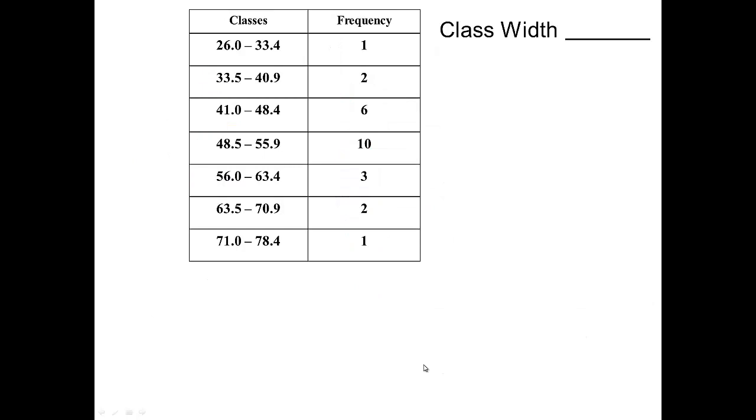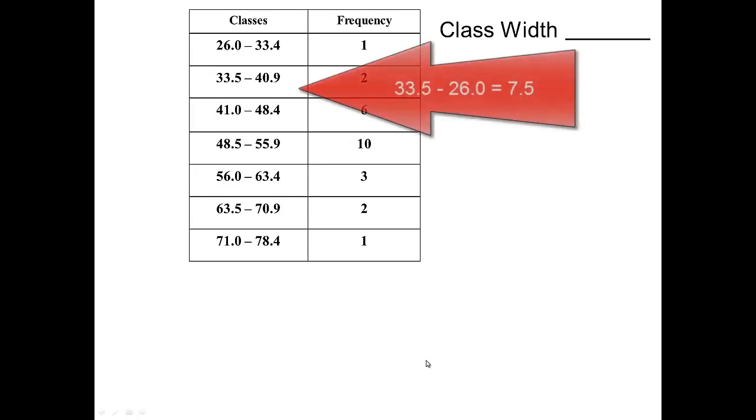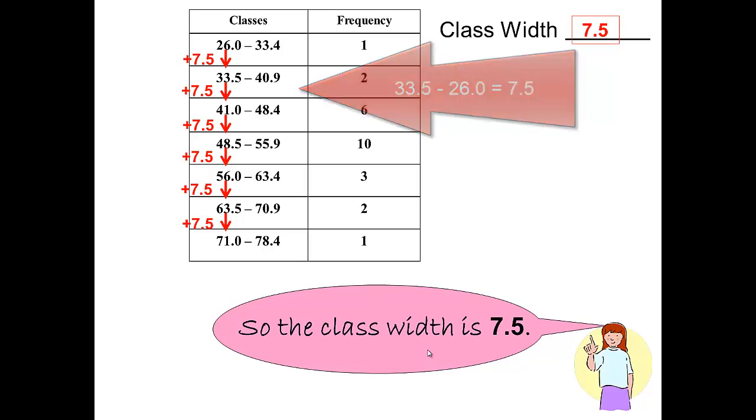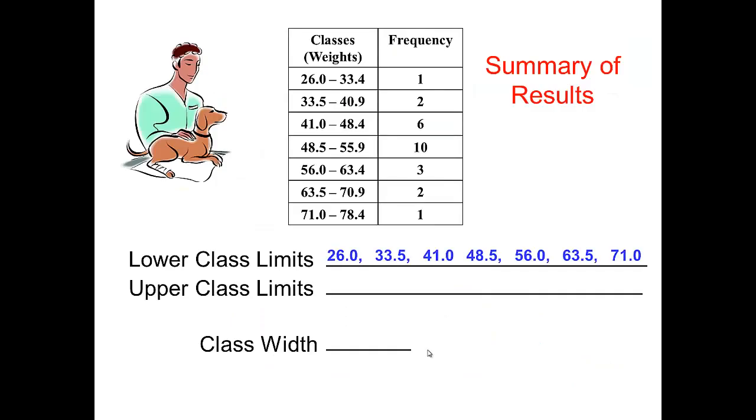To find the class width, we don't need to do it all, but you could subtract one lower class from the previous lower class. In this case, that would give us a distance of 7.5, and that would tell us that the class width then is 7.5. And then just quickly, because we don't want to dwell on it, the summary of the information and the summary of the results is listed here.